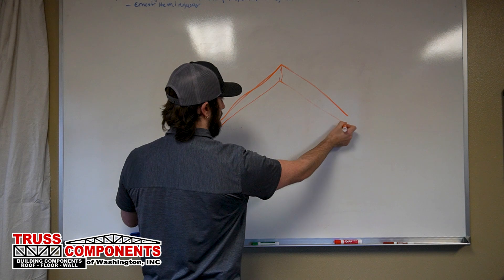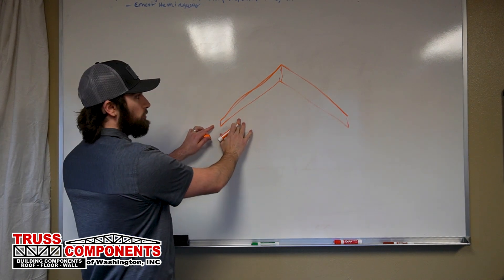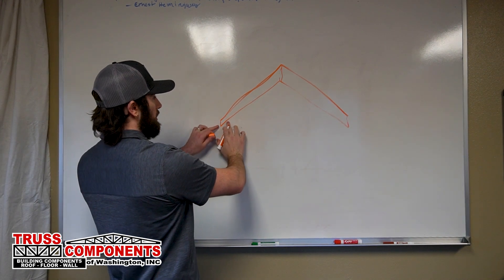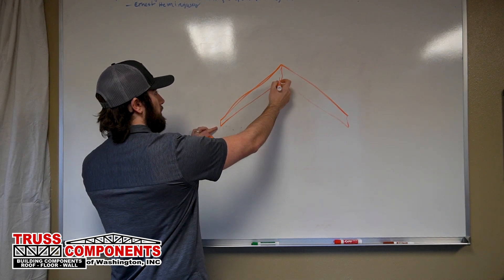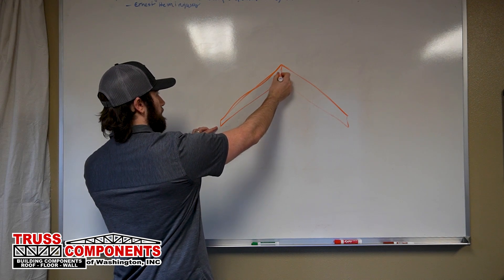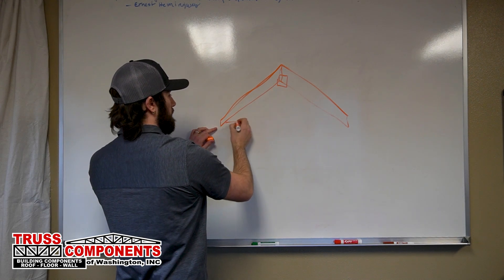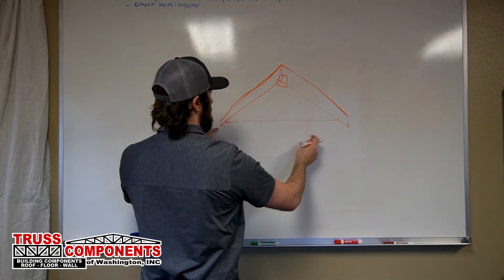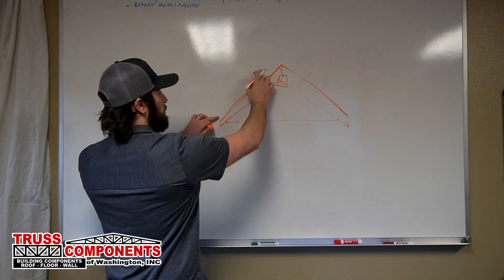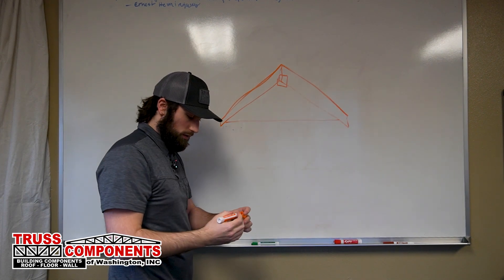Now remember, this is not to scale, but that would be the two-by-four piece of wood connected with a plate that represents the roof sheathed area of the truss.